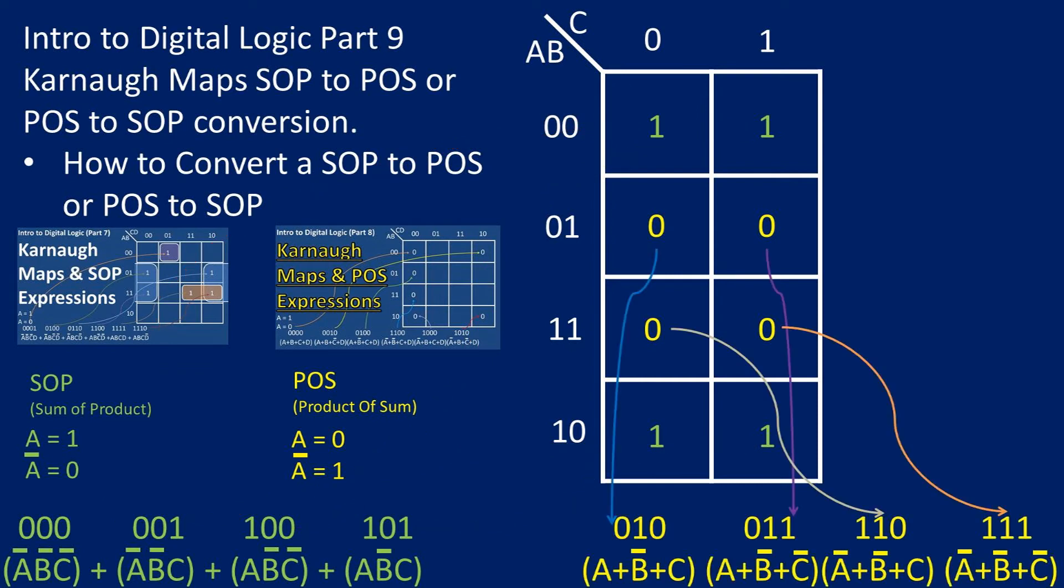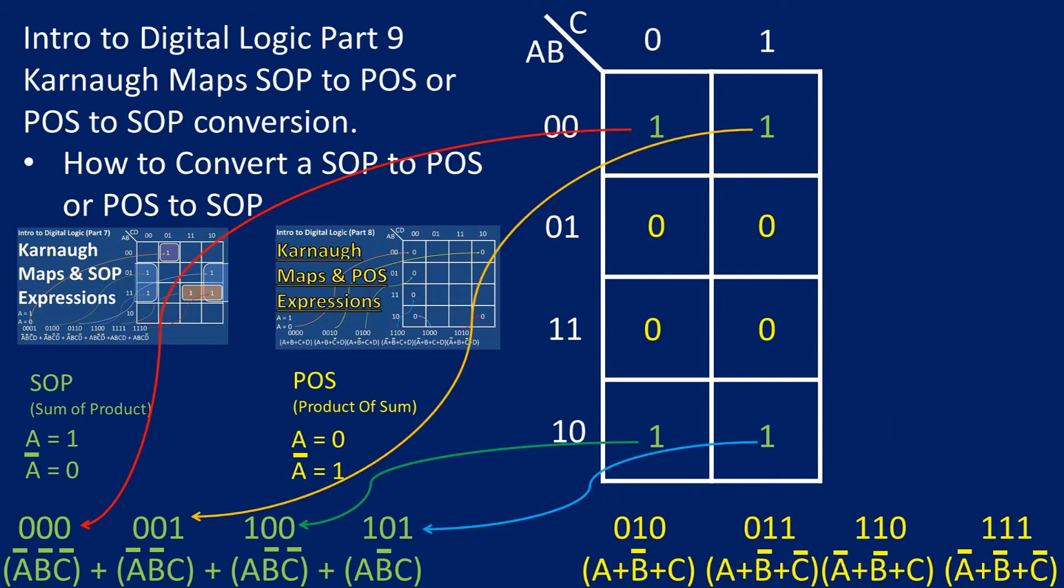If we start off with the product of sums expression, we complete the same process but place ones where there are not zeros in the Karnaugh map. Then we can convert this into a sum of products expression.